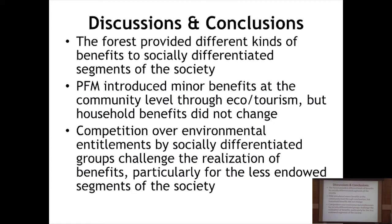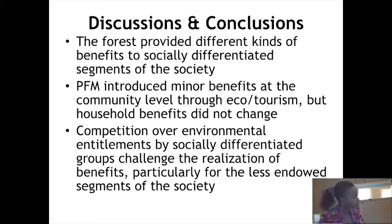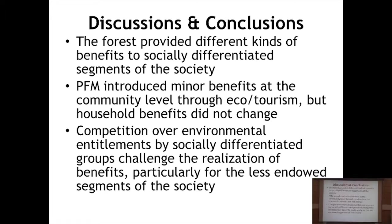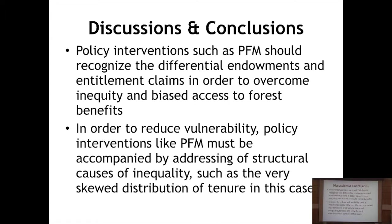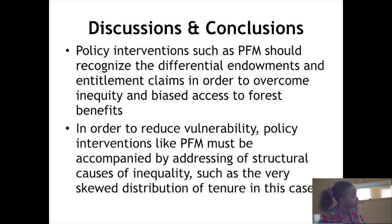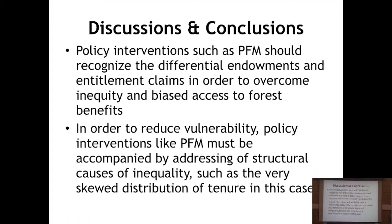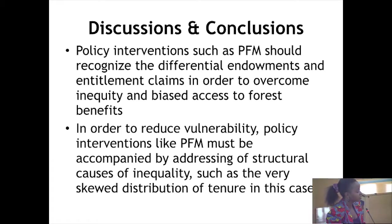In discussions and conclusions: the forest provided different kinds of benefits to socially differentiated segments of society. PFM introduced minor benefits at the community level through ecotourism, but household benefits did not change. Competition over environmental entitlements by socially differentiated groups challenged the realization of benefits, particularly for the less-endowed. Policy interventions such as PFM should recognize differential endowments and entitlement claims to overcome inequity and biased access to forest benefits, and must be accompanied by addressing structural causes of inequality — such as the very skewed distribution of tenure, with some households having 10,000 hectares and others only 1.2 hectares.